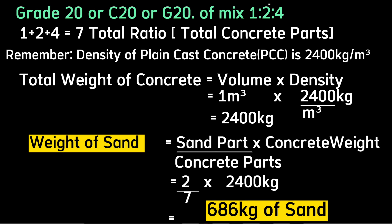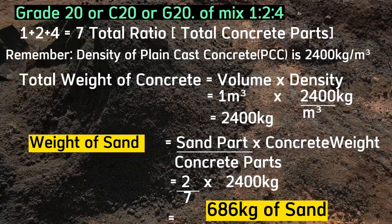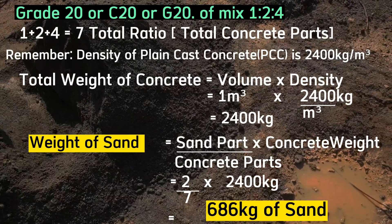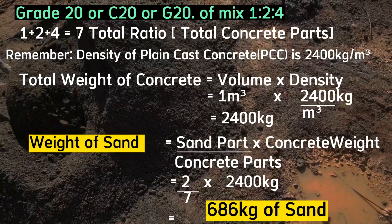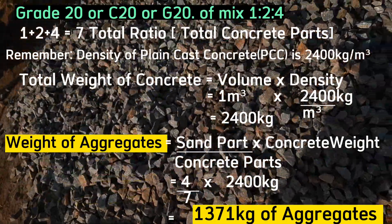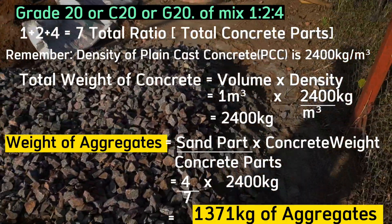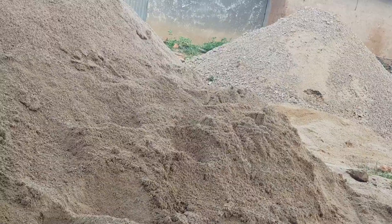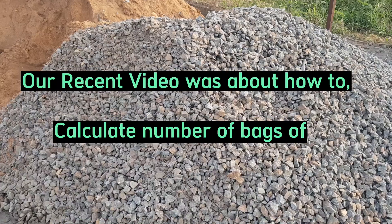For Grade 20 (mix ratio 1:2:4), the weight of sand equals 2/7 × 2400 = 685.7 kilograms, which is approximately 686 kilograms of sand. Similarly, the weight of aggregates equals 4/7 × 2400 = 1371 kilograms of aggregates.